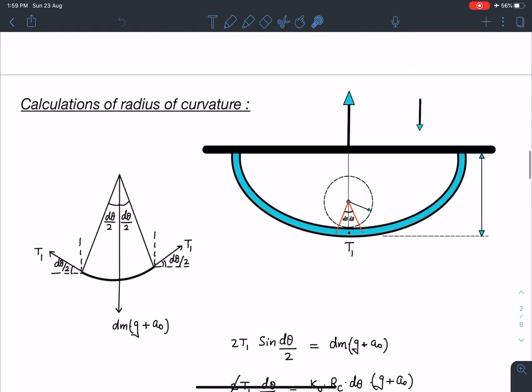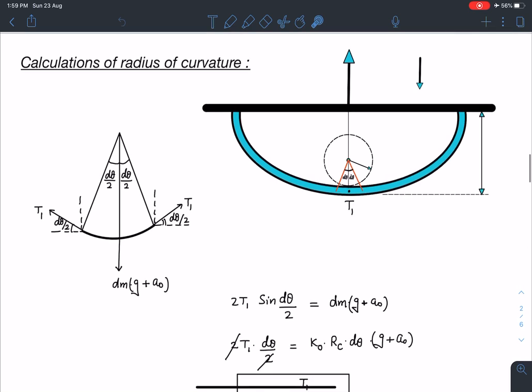So first, in order to calculate this radius of curvature, calculations of radius of curvature here, you can see at the lowest point, lowermost point here, lowest point, the tension is T1. So if I magnify this part and I take this small section of this string and if I magnify it, it is going to appear somewhat like this.